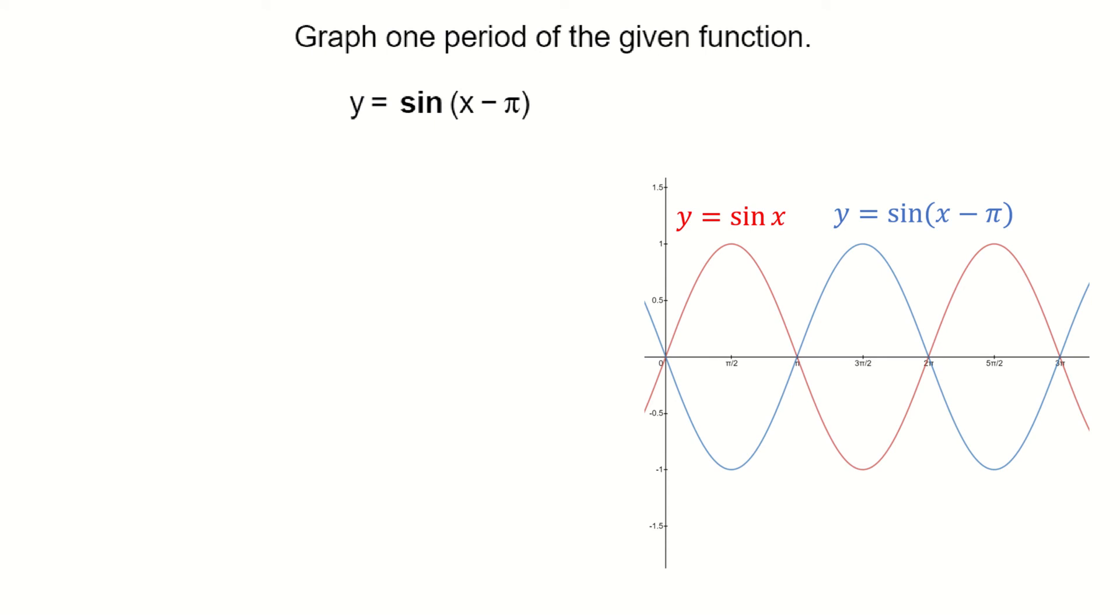We know that the standard form for sinusoids is y equals A plus B sine of C times X minus D, where A is the baseline, B or rather the absolute value of B is the amplitude, C is 2 pi over the period, and D is the phase shift.